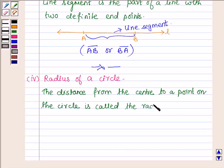That is, if we have a circle and let O be its center, then any point on the circle A, and the line segment joining the center and this point A is called the radius of the circle.